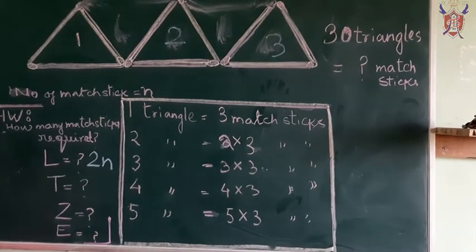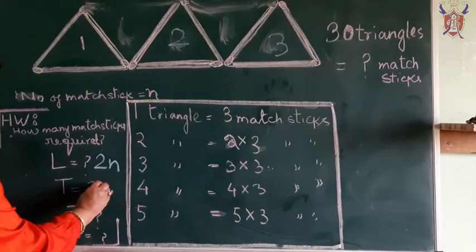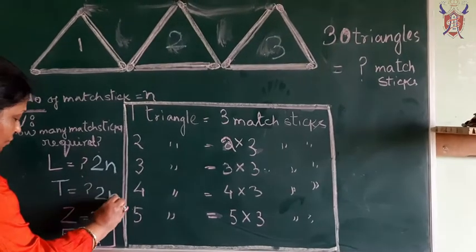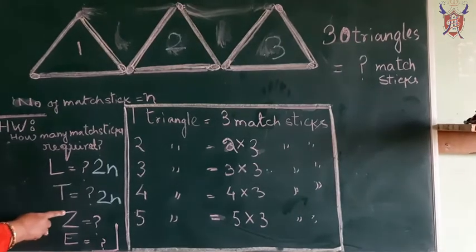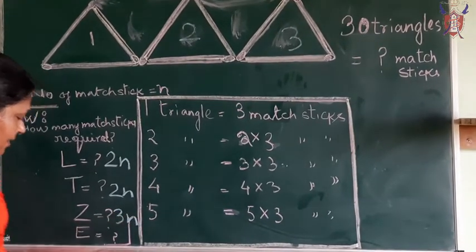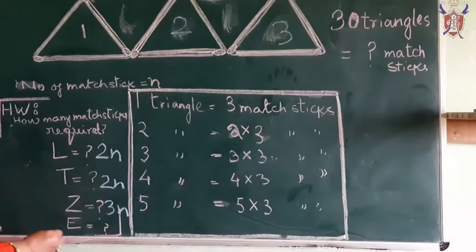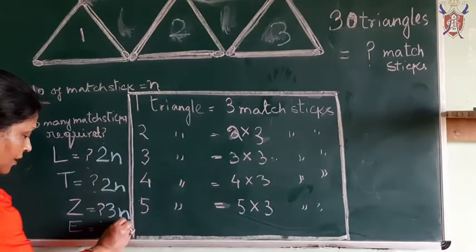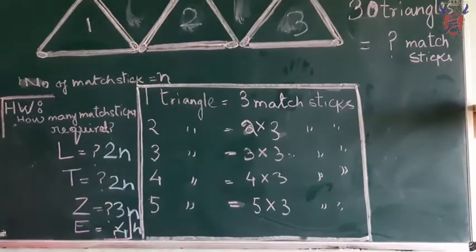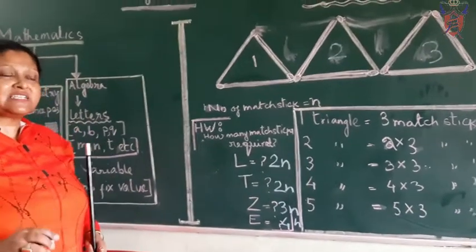The T is there. How many matchsticks are there? 1 or 2. How will you write? 2N. For Z, how will you write? 1, 2, 3, that is 3N. For E, you can write 1, 2, 3, and 4N. So this is the way you can create the formula and go on. This is my first session.